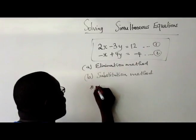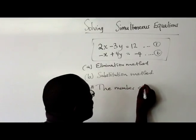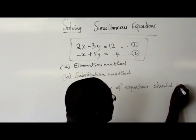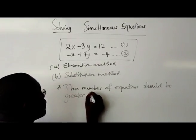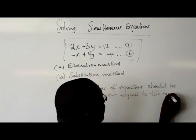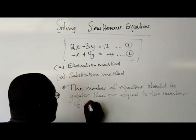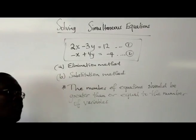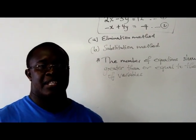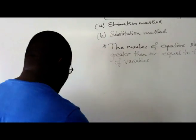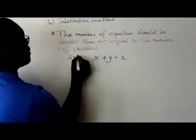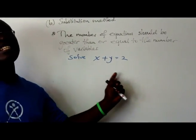So a rule of thumb when you're dealing with simultaneous equations, equations in general, is that the number of equations should be greater than or equal to the number of variables. So whenever you're dealing with equations, the first thing to check is to say how many variables do I have and how many equations are there.